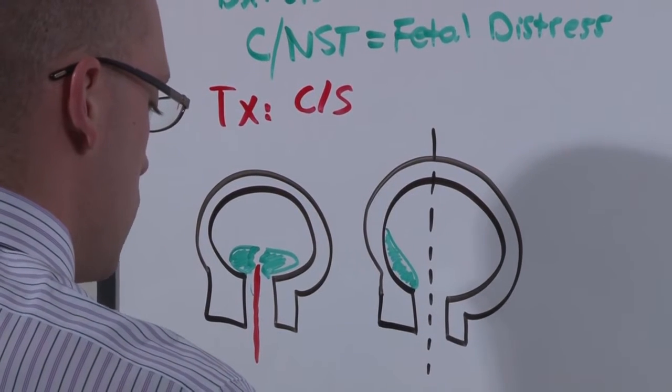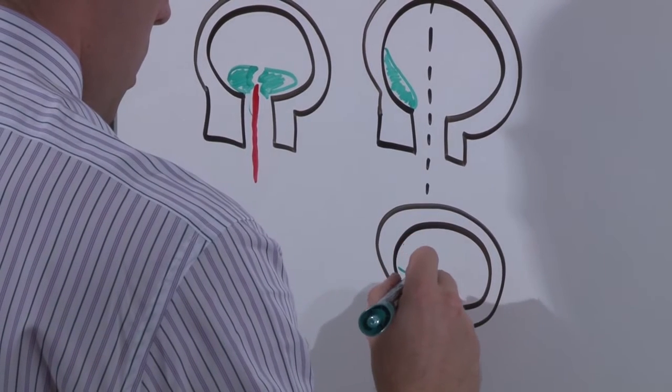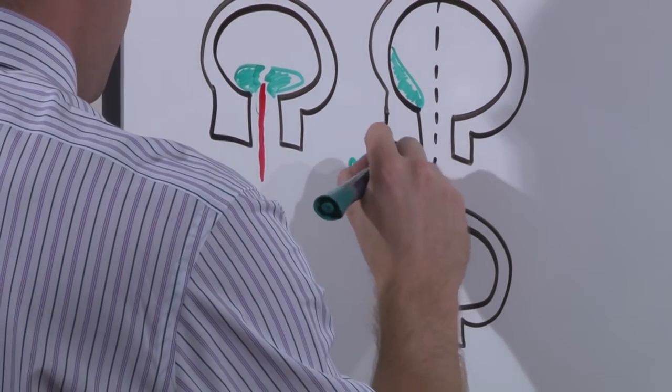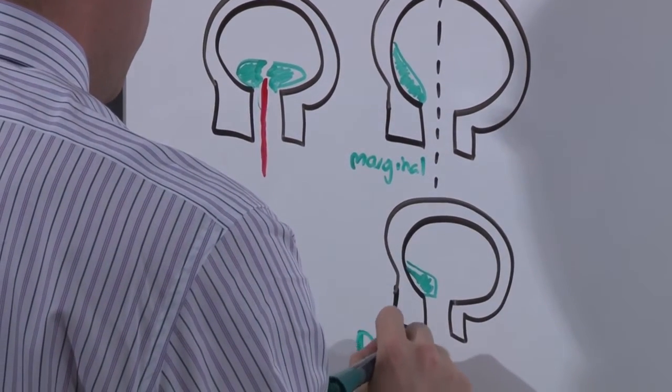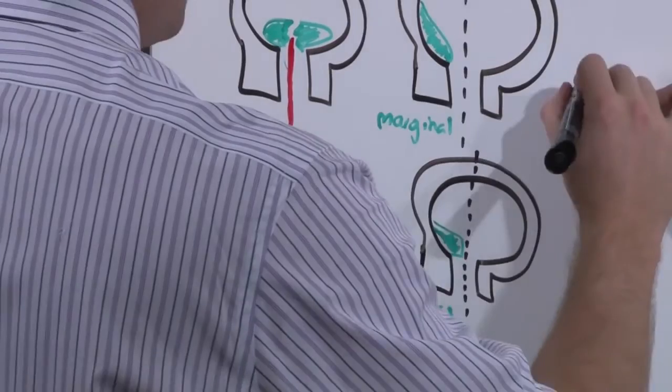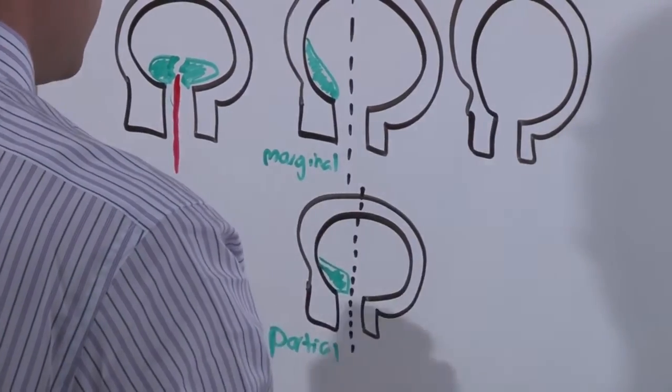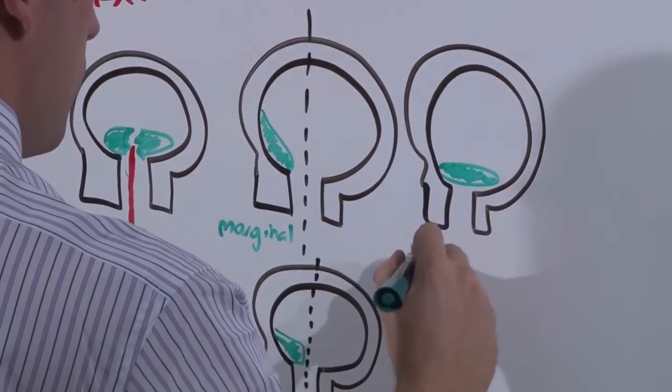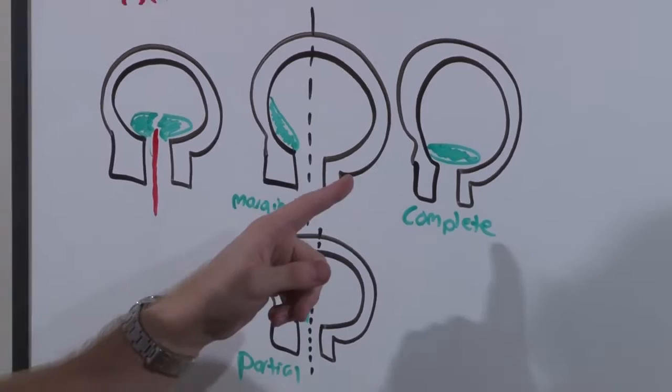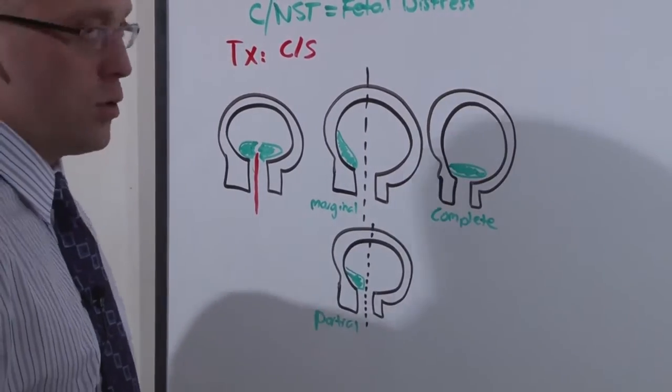But sometimes it's not so smart and not so dynamic. A partial previa goes to the midline but does not cross. And then, of course, a complete is going to go all the way across the os. But why would the placenta try to transverse the os? Why wouldn't it choose a more nutritious and easier accessible part of the uterus?